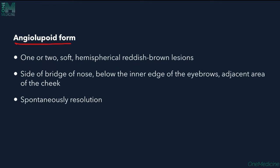The angiolupoid form shows 1 or 2 soft hemispherical reddish-brown lesions, characteristically seen on the side of the bridge of the nose, below the inner edge of the eyebrows, or adjacent areas of the cheek. Females are mostly affected, and spontaneous resolution of lesions is seen.